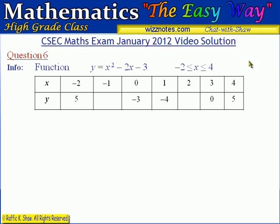Welcome to question 6 CSEP math exam January 2012 video solution. The question gave us the function y equals x squared minus 2x minus 3 — a quadratic function — and it gave us values in a table from x equals negative 2 up to x equals 4, those being the integer x values. We are asked in part A to copy and complete the table.